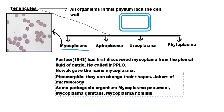Another fact is that Mycoplasma has the least amount of genetic material of all organisms known. This is quite obvious because it is so small and has very little metabolism to perform since it is always pathogenic. Mycoplasma also contains three layers of cell membrane.